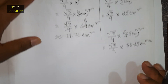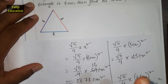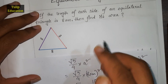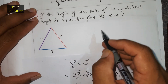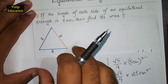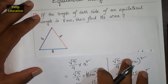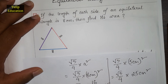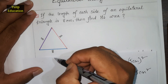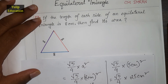So in this tutorial we have learned how to find out the area of an equilateral triangle where any one side is given. In our next tutorial we will discuss how to find out its height where one side is given. See you in the next tutorial.